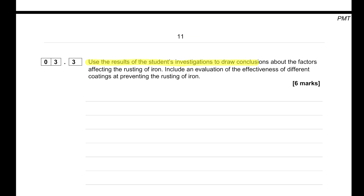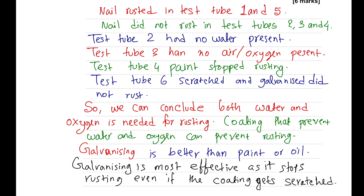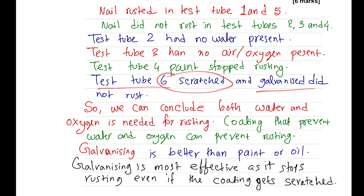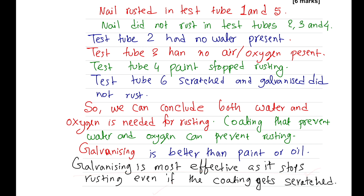Using the investigation results to draw conclusions: the nail rusted in test tubes 1 and 5, but did not rust in test tubes 2, 3, and 4. Tube 2 had no water; tube 3 had no air or oxygen; tube 4's paint stopped rusting; tube 6 — the galvanized nail did not rust even when scratched. We conclude that both water and oxygen are needed for rusting. Coatings that prevent water and oxygen access can prevent rusting. Galvanizing is more effective than paint, as it prevents rusting even when the coating is scratched.